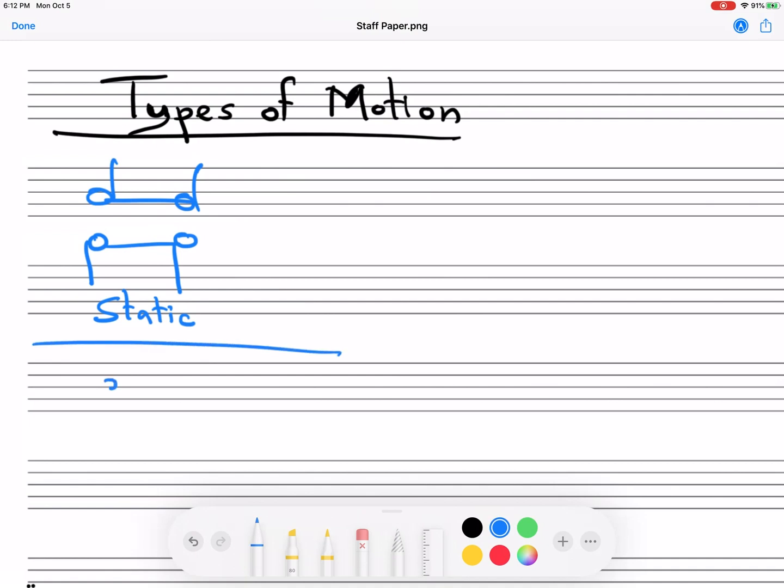We could also have one voice move, like this, let's say it moves up a step, and the other one doesn't move. We call this oblique.